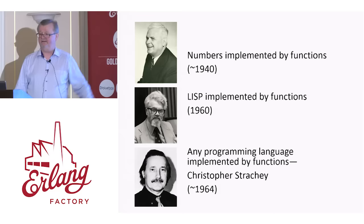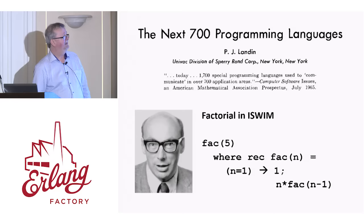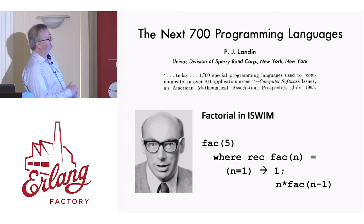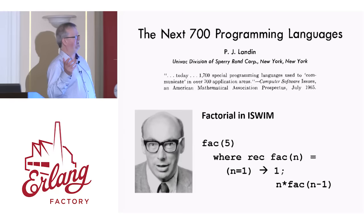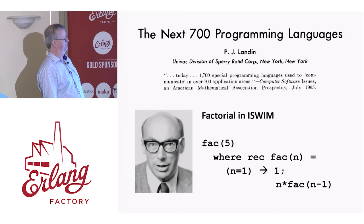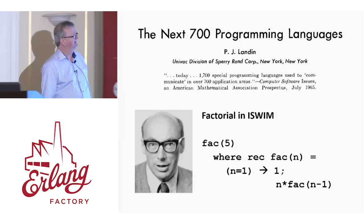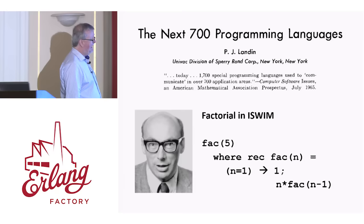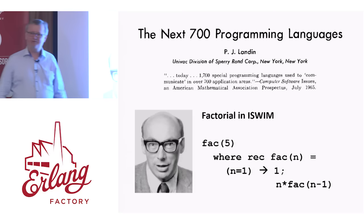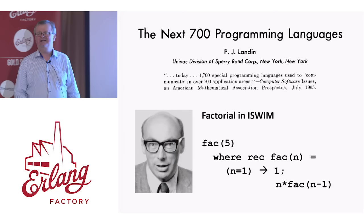I want to skip ahead to 1965, when a landmark paper was published called 'The Next 700 Programming Languages' by Peter Landin at Univac. The abstract says: today, 1,700 special programming languages are used to communicate in over 700 application areas. Landin thought this was rubbish — he thought it would be much better to have, instead of 700 programming languages, just one programming language with 700 libraries for the different application areas. Quite a modern idea. He thought that one programming language should be his own, which he called ISWIM — it stands for 'if you see what I mean.' ISWIM has been a great influence on many functional programming languages that followed.